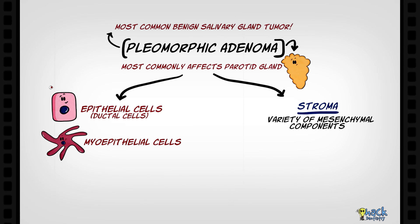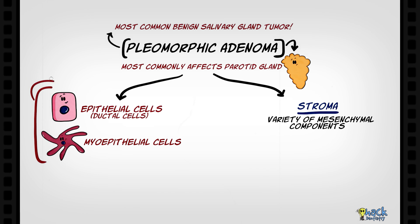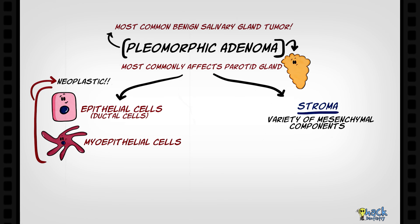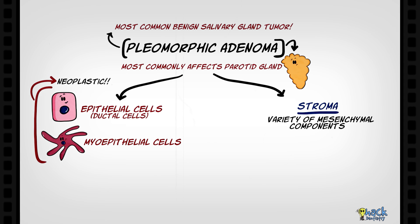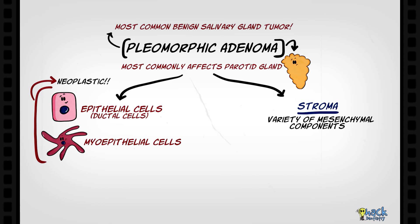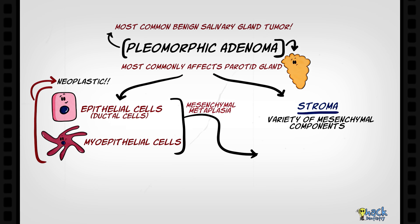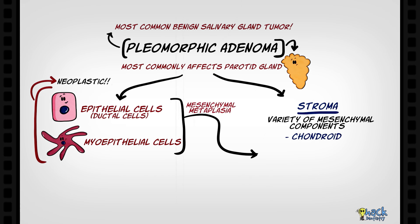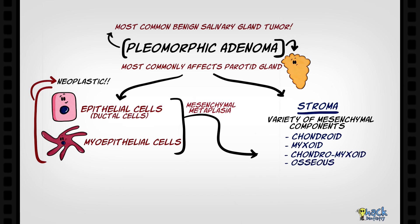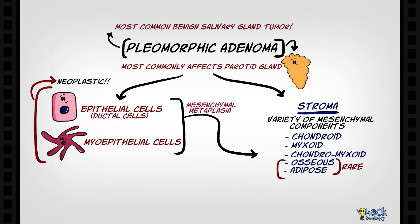Pleomorphic adenoma comprises neoplastic epithelial or ductal cells and myoepithelial cells. Studies have reported that these neoplastic myoepithelial cells, ductal cells, or both may undergo mesenchymal metaplasia to give rise to varied tissue components like chondroid, myxoid, chondromyxoid, and very rarely osseous and adipose tissue, which comprises the connective tissue or stroma.